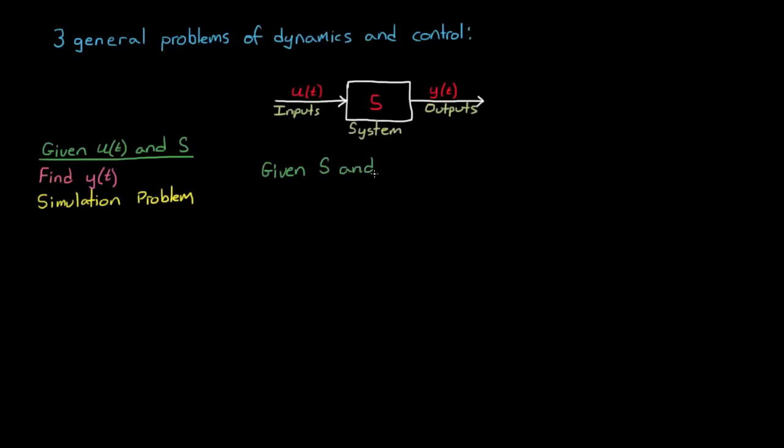For the second problem, if we know the system and we know how we want the outputs to behave, then we can determine the appropriate inputs through various control methods. This is the general controls problem, how to change the inputs to a system in order for it to behave the way we want.